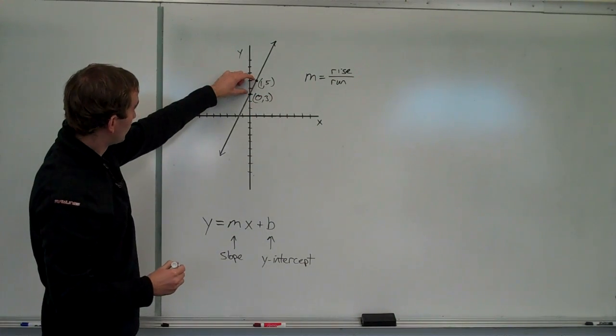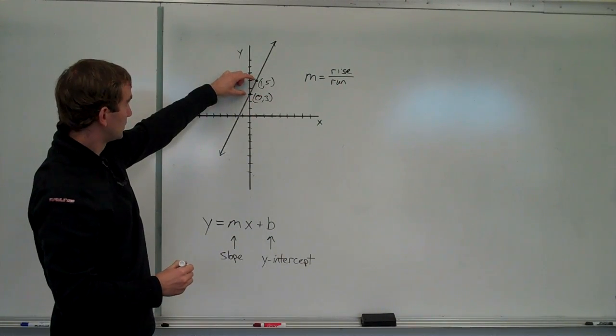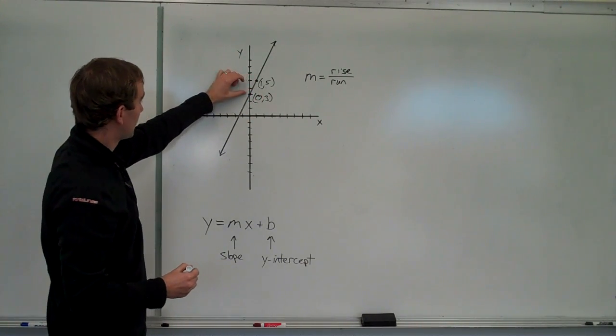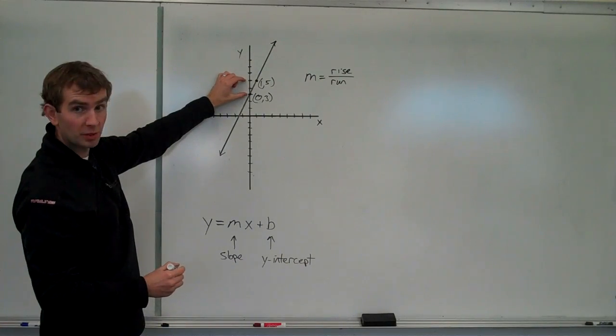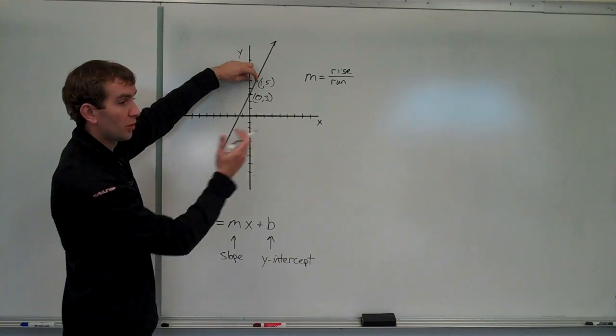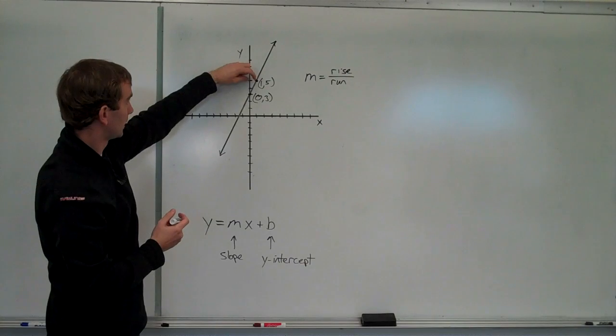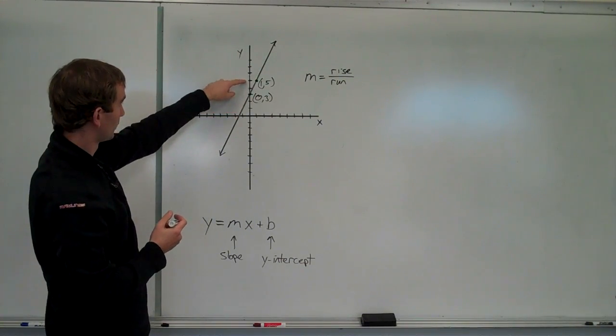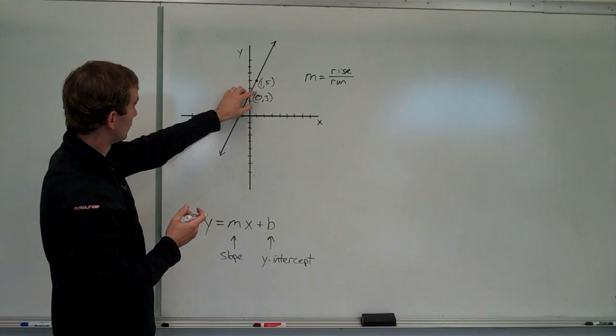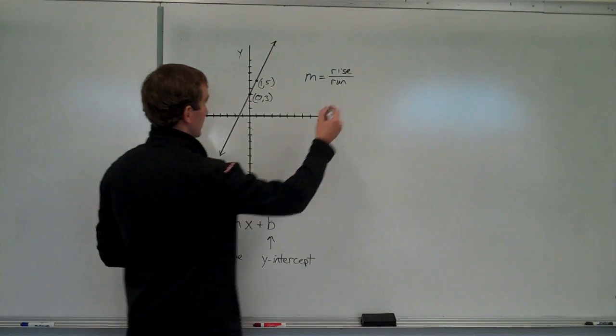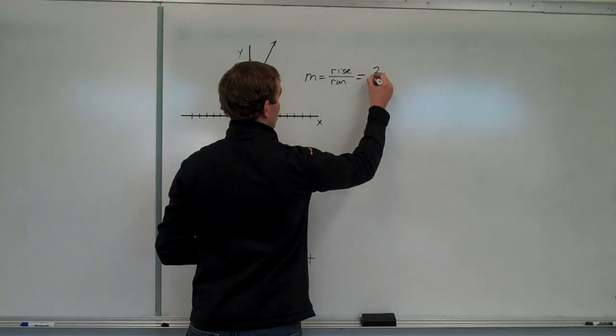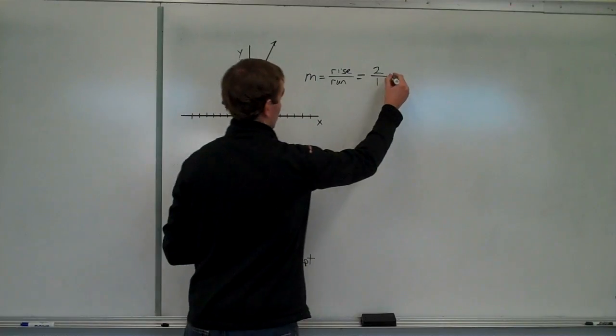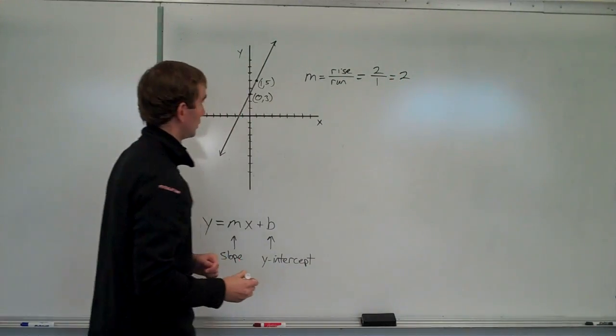And using those two points, we can figure out what our slope is. Because we can figure out to get from point A here to point B, how much we rise, how much we go up in other words, and how much we run, how much we go over. So if we just count units in this case, it's pretty easy. The rise is one, two, and our run is just one, one over. So in this case, we have two over one. That's our slope. We're just plain two.